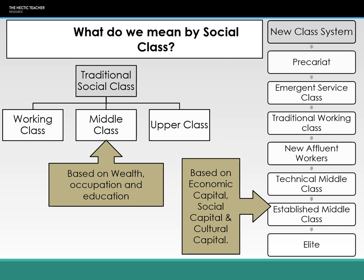For this categorisation they looked at economic capital — your income, savings, whether you own your own house, how much it's worth, your assets. They looked at your social capital, which is the number and status of people someone knows — basically who your friends and colleagues are. The more important people you know, the higher up the class system you are. And then cultural capital, defined as the extent and nature of cultural interests and activities — what your hobbies and interests are.